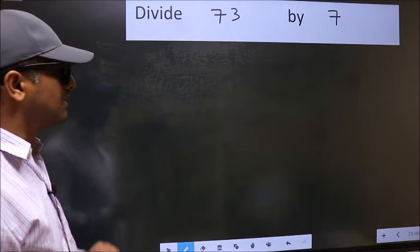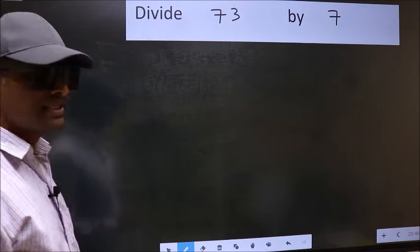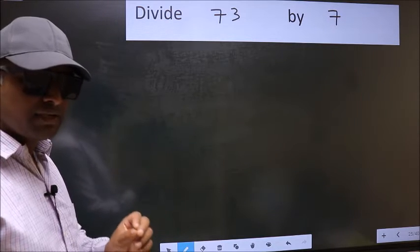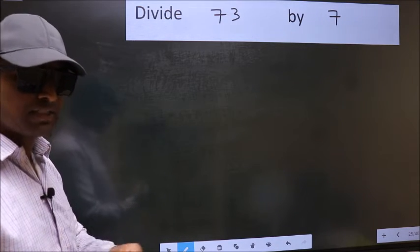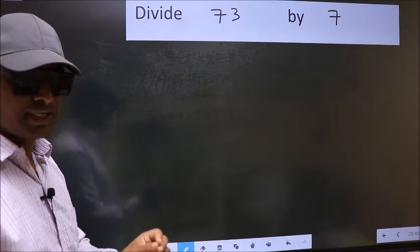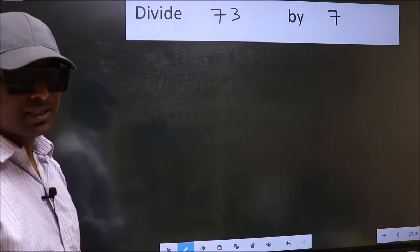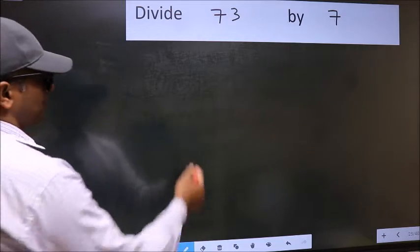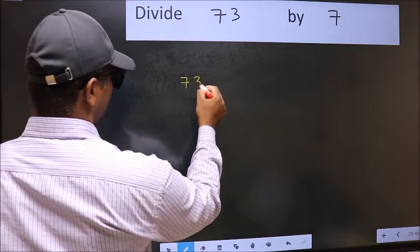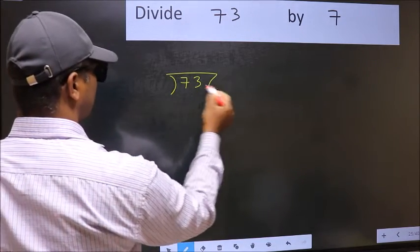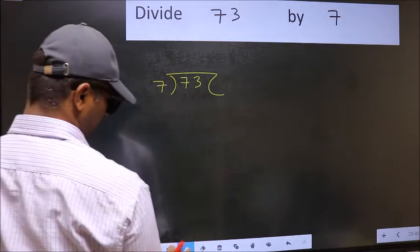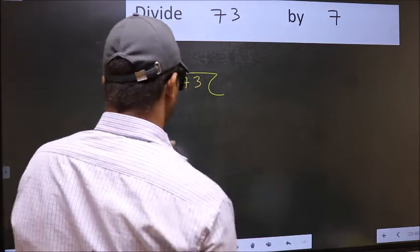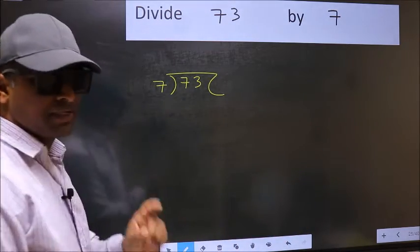Divide 73 by 7. While doing this division, many make this mistake. I will show you what the mistake is. But before that, we should frame it in this way: 73 divided by 7. This is step 1.